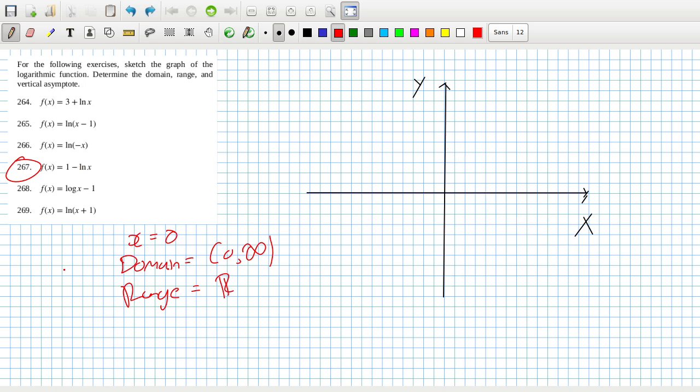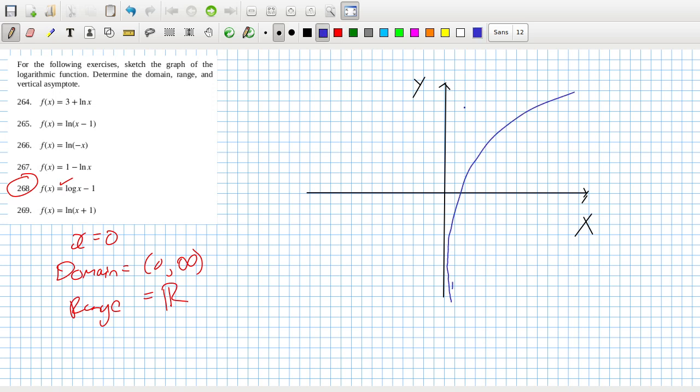268. So the asymptote's at zero, domain is zero to infinity, and the range is all reals. That's positive this time, like this, with the asymptote at zero. And if you want to know where the root is, it's when this would be one, so I guess this would be at 10, because log 10 is one. That's not in the book though, but I can do the last one.